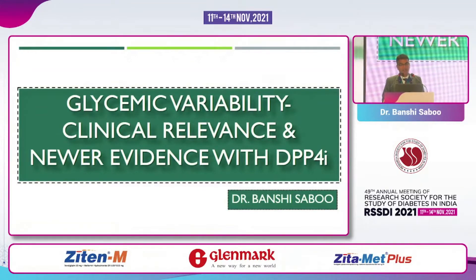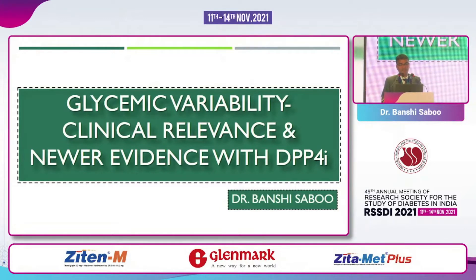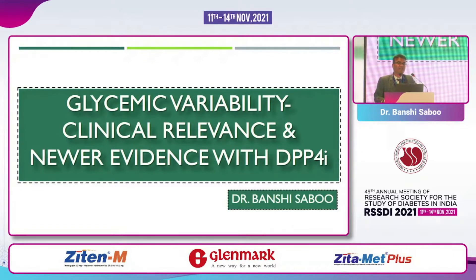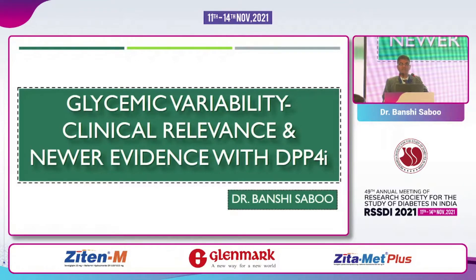In the next 15 to 20 minutes I'll be talking about glycemic variability, the clinical relevance and the new evidence with DPP-4. This is a glyptin symposia where we discussed different glyptins and one of the most commonly used glyptins in our country is teneligliptin. I would like to share newer data which we have published — I was the principal investigator for this glycemic variability study along with teneligliptin.